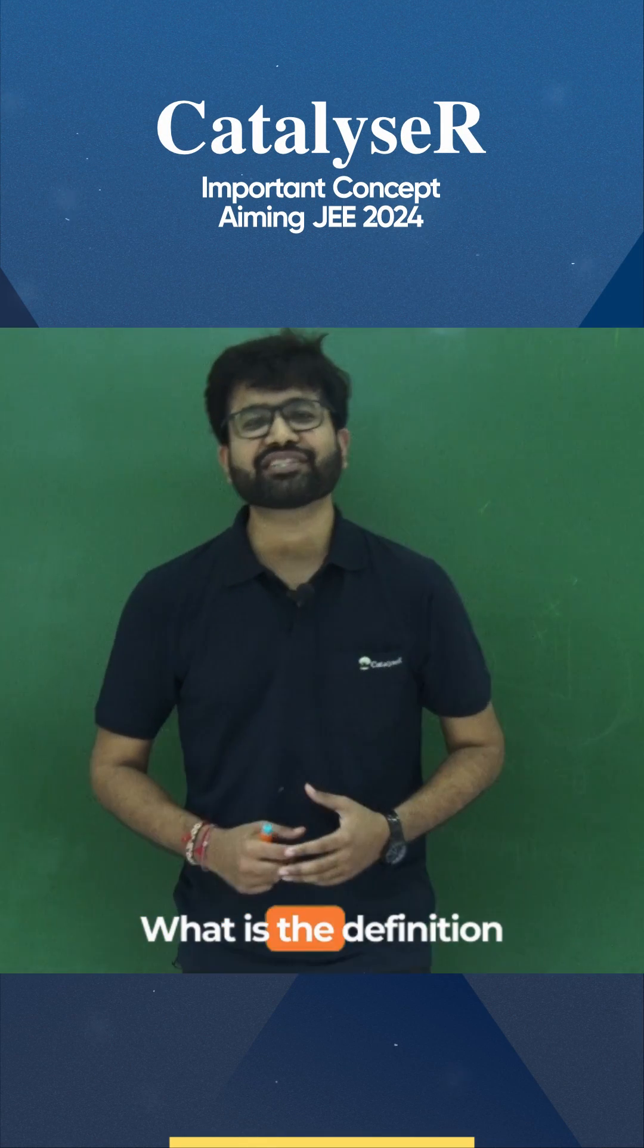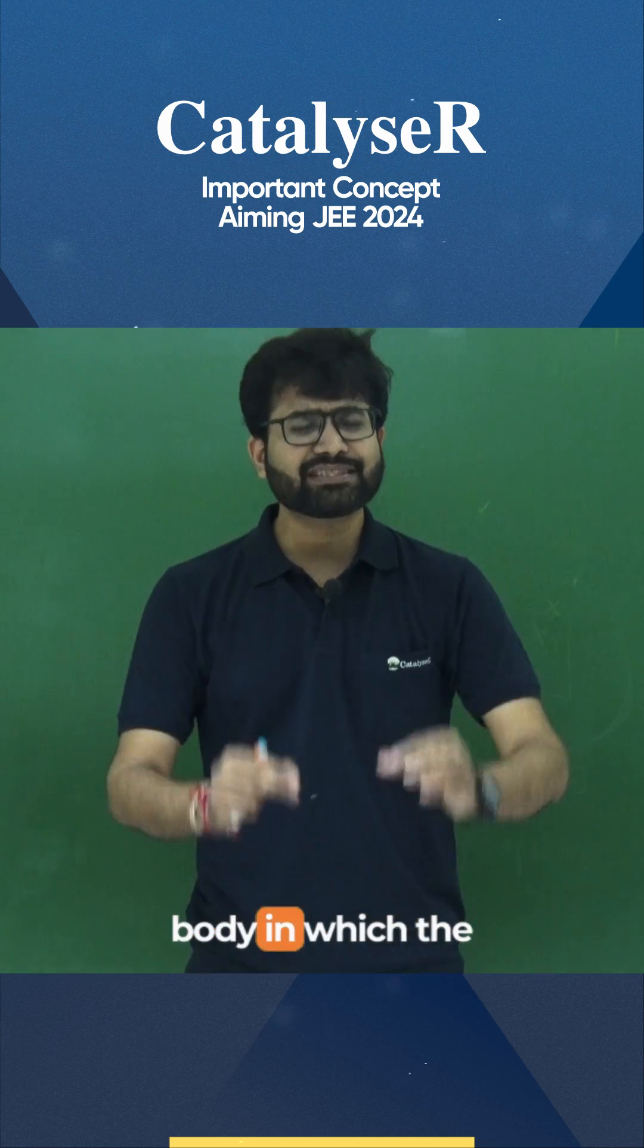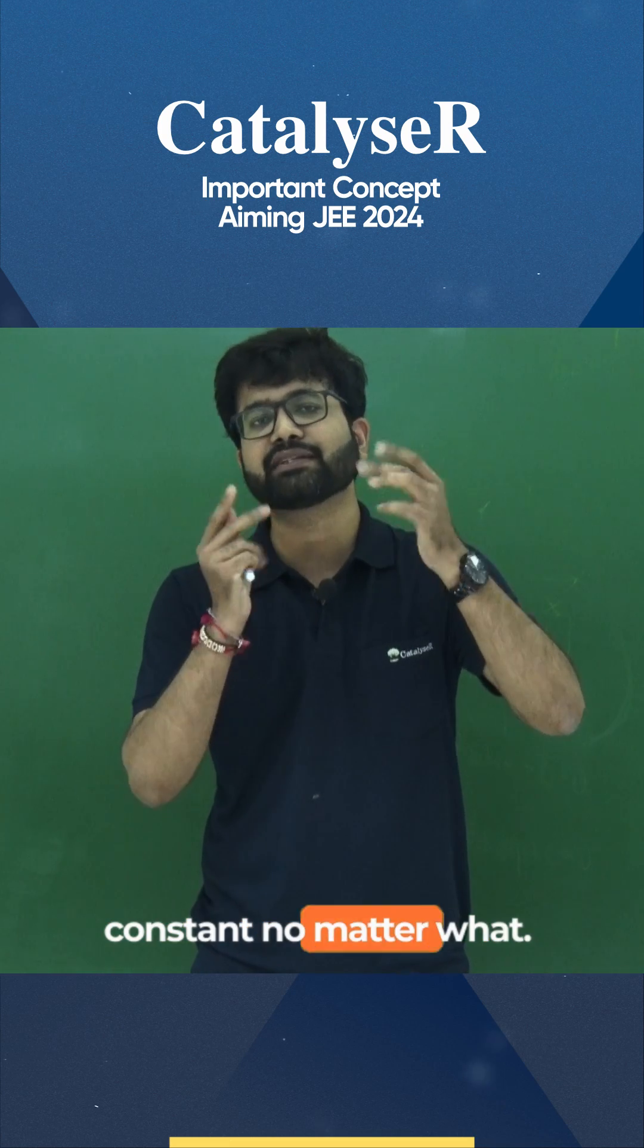Okay students, so what is the definition of a rigid body when it comes to physics? A rigid body is a body in which the distance between two particles always remains constant no matter what.